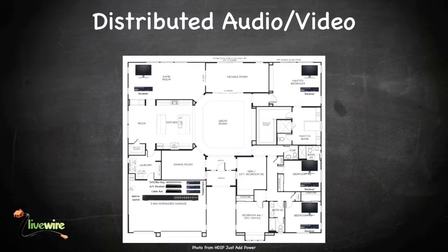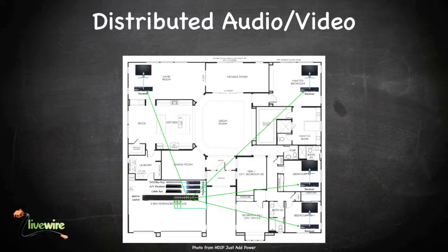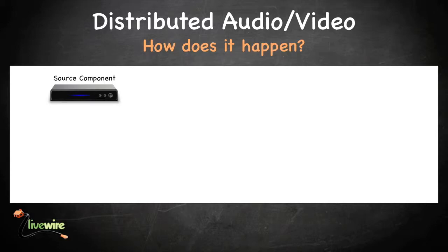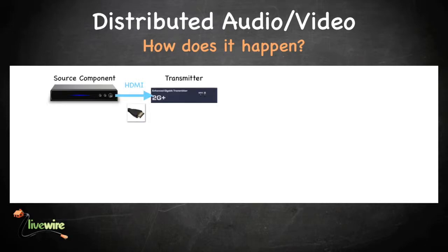Looking at the big picture, a signal will travel from the source component to its transmitter, to the matrix switch, to a receiver somewhere else in the house, and finally to the display that is connected to that receiver. Each source component, such as a DVD player, Blu-ray player, or a cable box, is connected to its own transmitter via an HDMI cable.